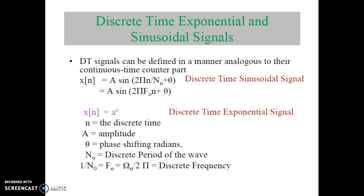Next, discrete time exponential and sinusoidal signals. Discrete time signals can be defined in a manner analogous to their continuous time counterparts. The discrete time sinusoidal signal can be mathematically expressed as X(N) = A·sin(2πF₀N + θ). The discrete time exponential signal can be expressed as X(N) = A^N, where N represents discrete time, A represents amplitude, θ represents phase shift in radians, N₀ represents the discrete period of the wave, and 1/N₀ = F₀ = Ω₀/2π, which is the discrete frequency.